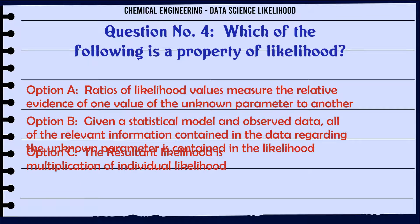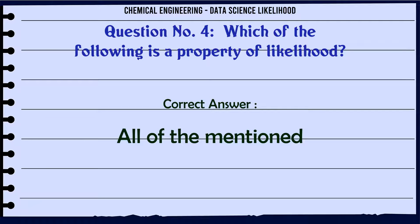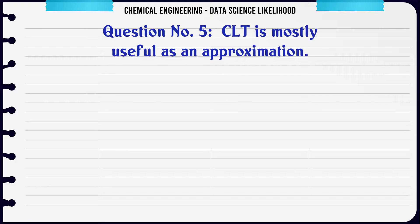Which of the following is a property of likelihood? A. Ratios of likelihood values measure the relative evidence of one value of the unknown parameter to another. B. Given a statistical model and observed data, all of the relevant information contained in the data regarding the unknown parameter is contained in the likelihood. C. The resultant likelihood is multiplication of individual likelihoods. D. All of the mentioned. The correct answer is All of the mentioned.